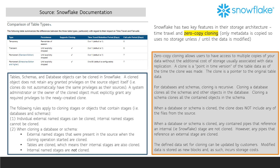Individual external named stages can be cloned, while internal named stages cannot be cloned. Specifically, external named stages that were present in the source when the cloning operation started are cloned.